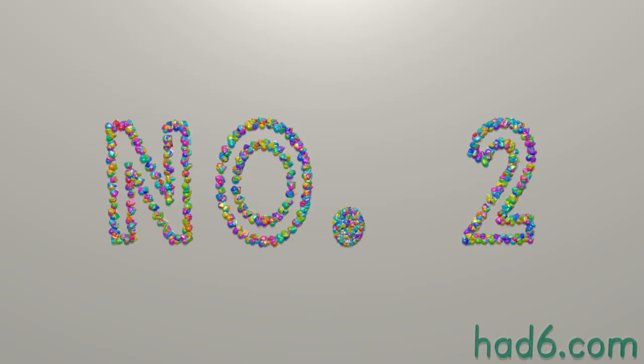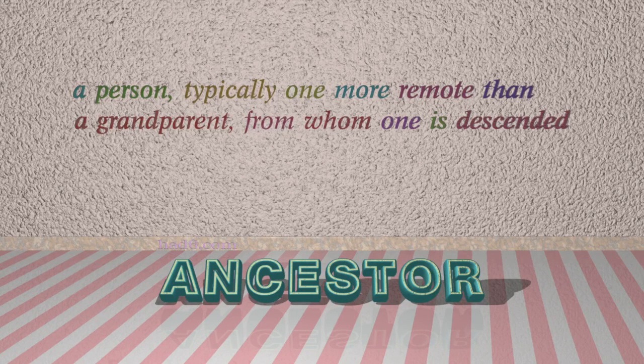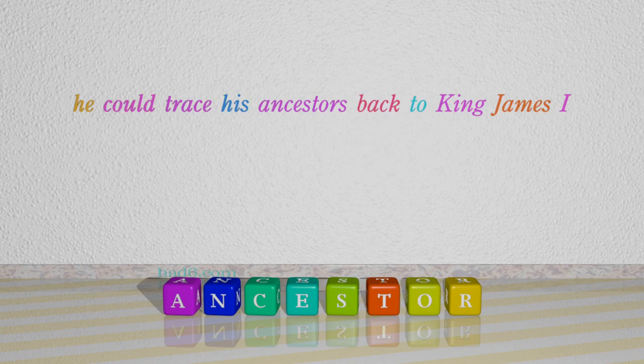Number 2: Ancestor, which means a person, typically one more remote than a grandparent, from whom one is descended. For example: he could trace his ancestors back to King James the First.